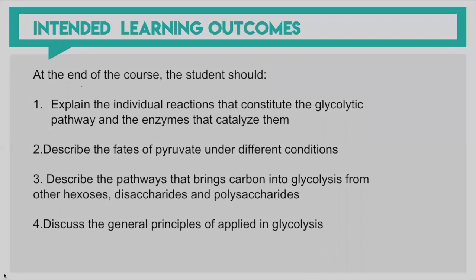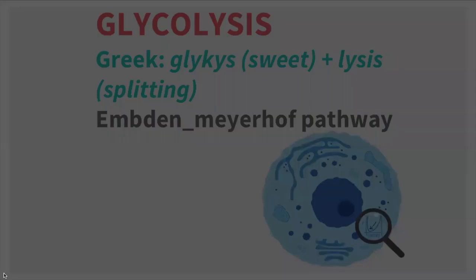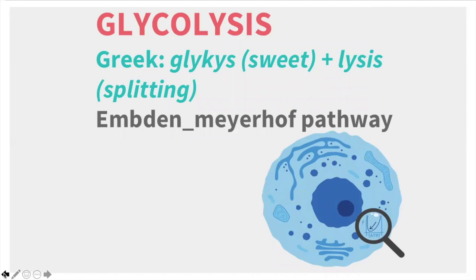For the entire carbohydrate metabolism, we will cover glycolysis, gluconeogenesis, fate of pyruvate, feeder pathways, regulation of carbohydrate catabolism, secondary pathways of glucose oxidation, glycogen metabolism (both catabolism and anabolism), and the pentose phosphate pathway. Glycolysis is also called the Emden-Meyerhof pathway, named after the two scientists who discovered it, and the name means sugar splitting.